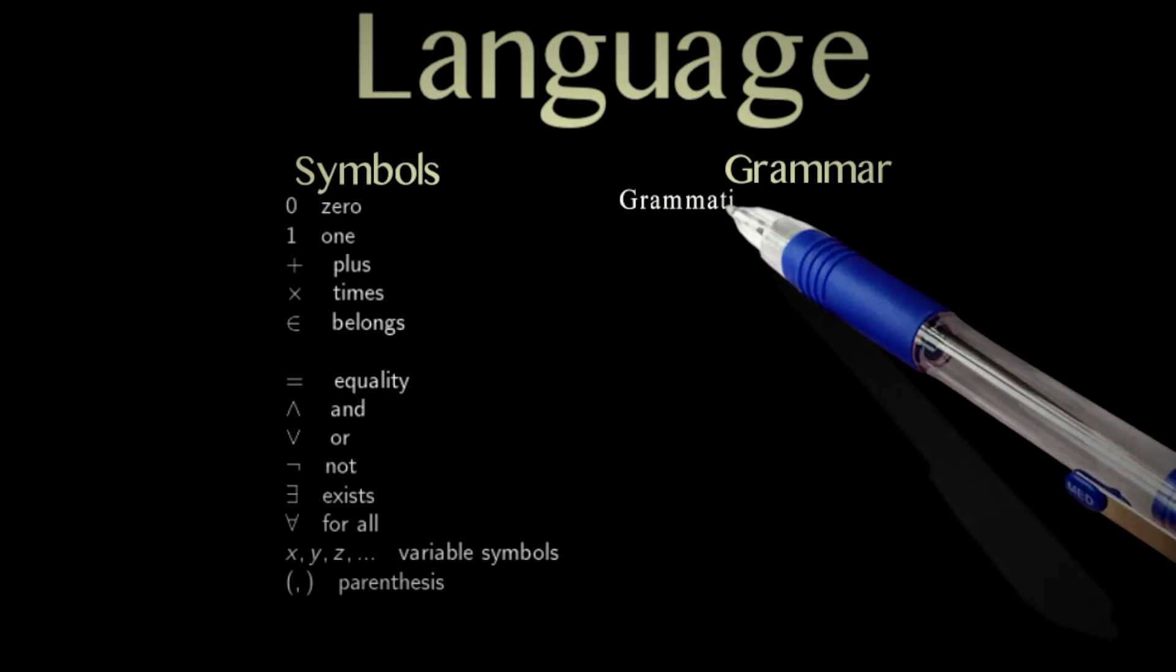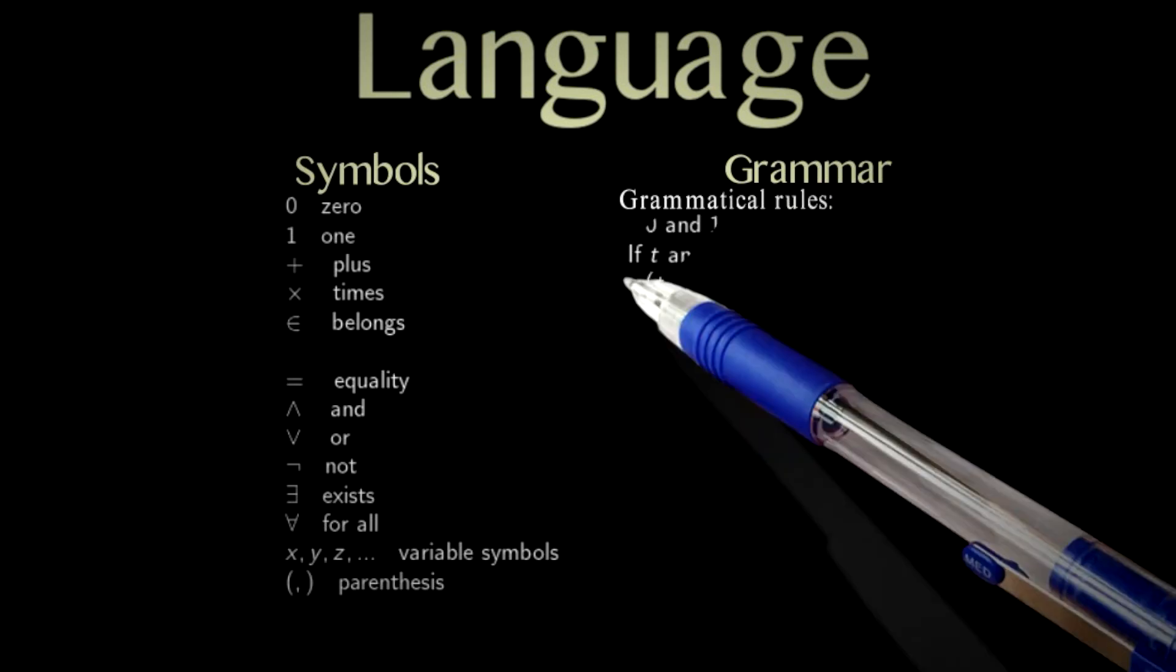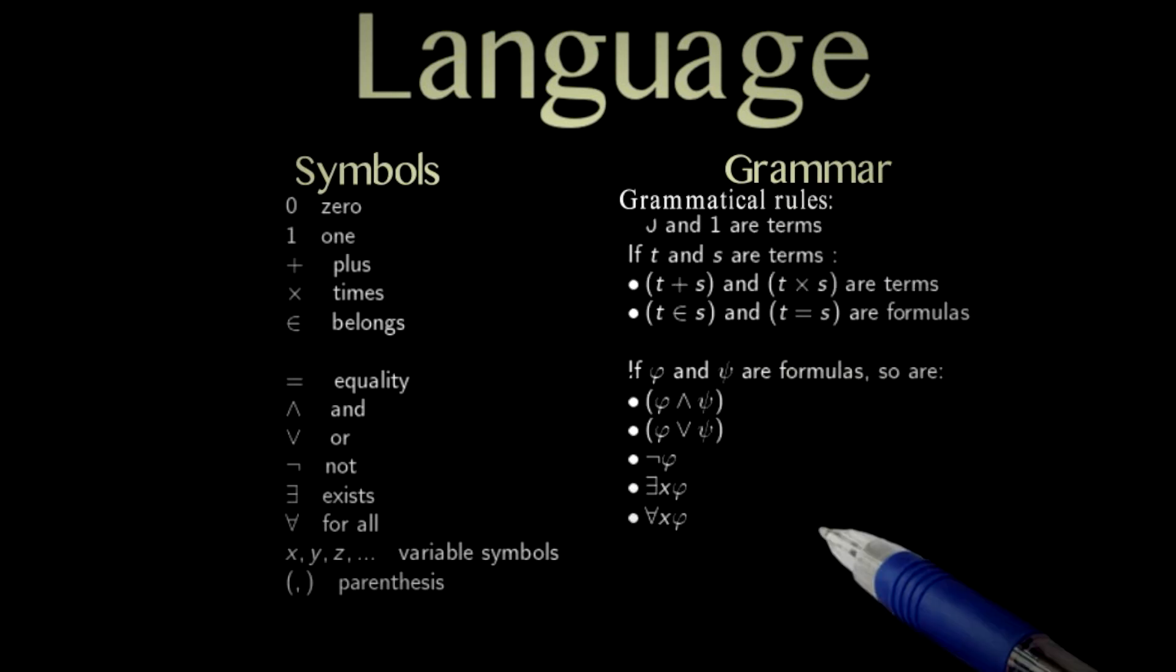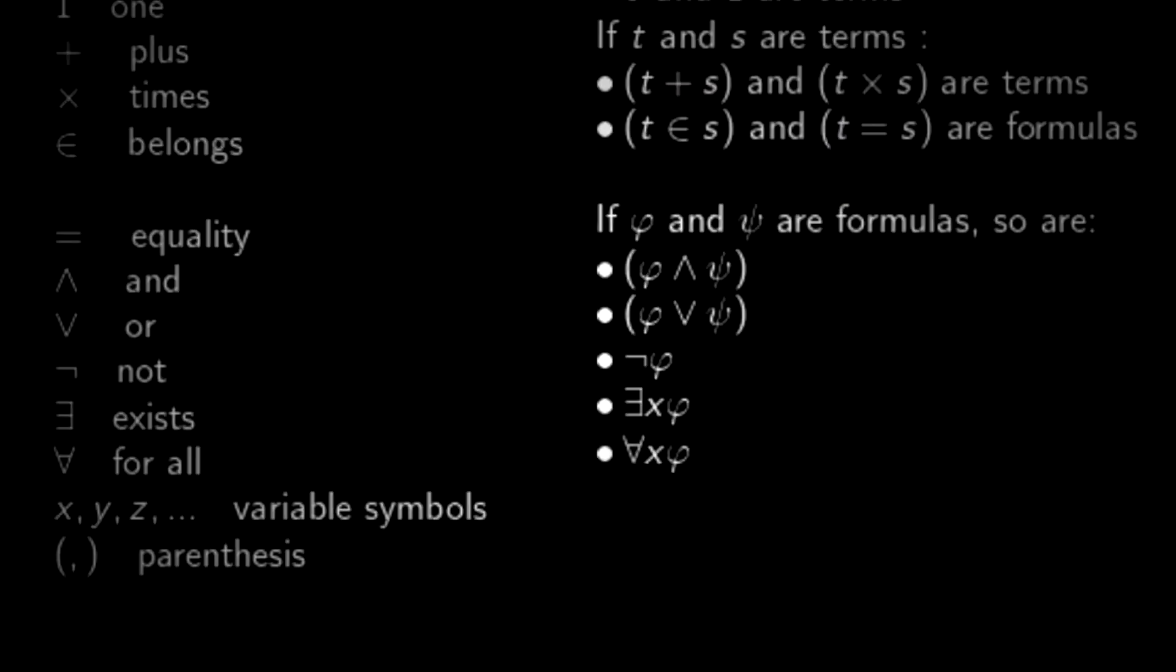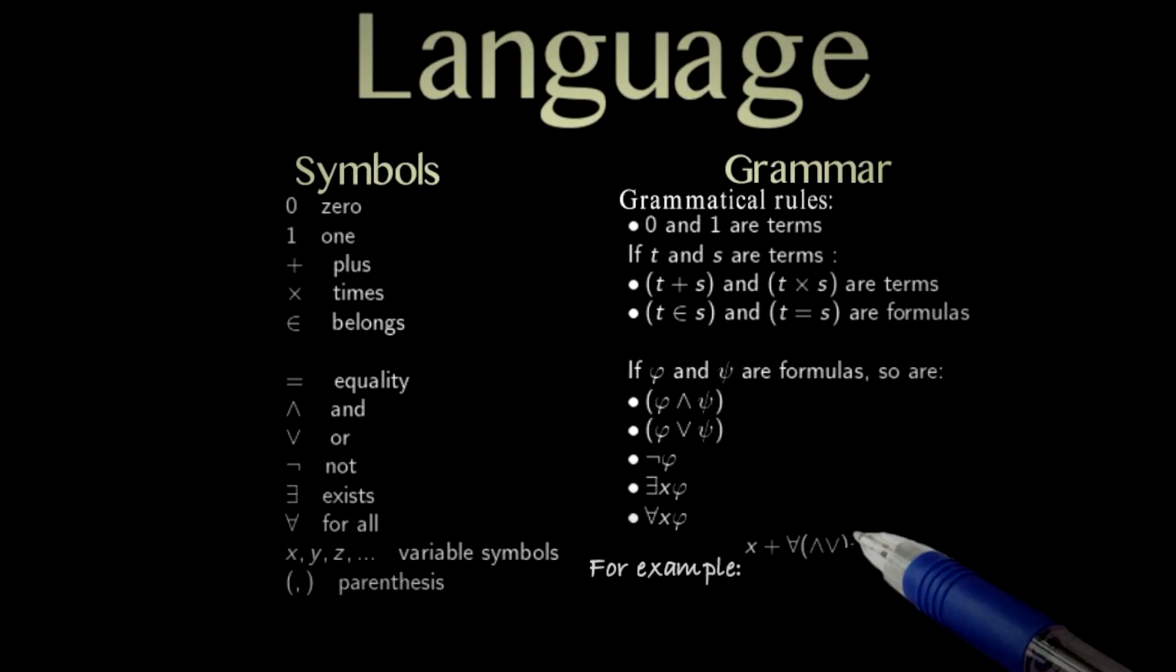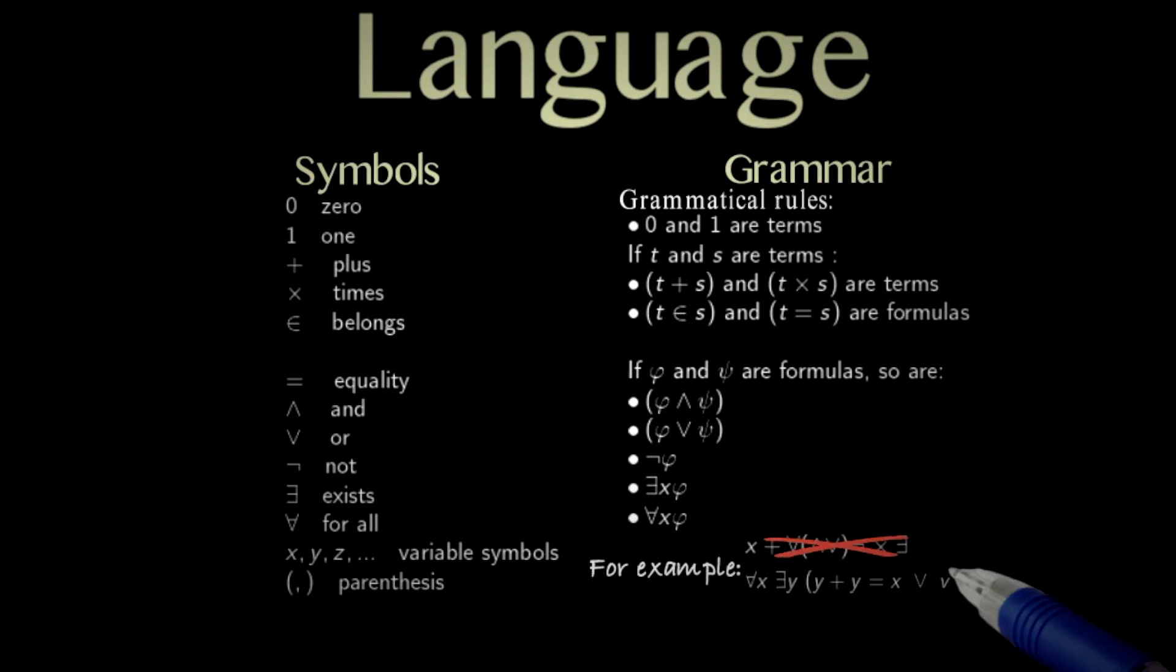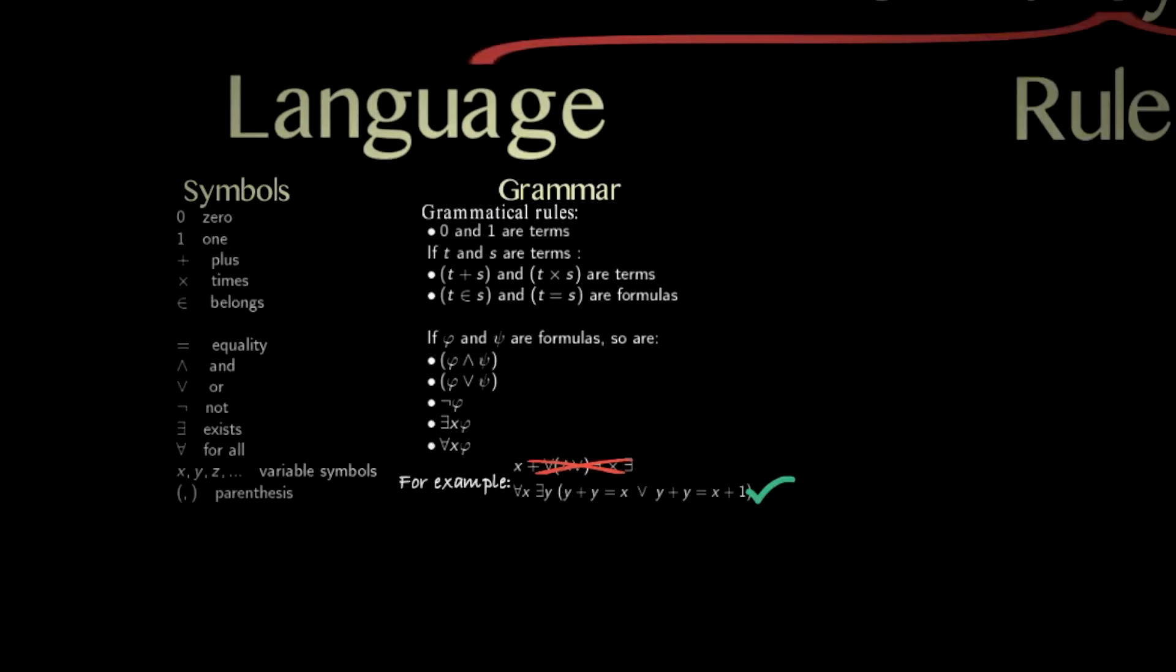Then we need to put the symbols together. And for that, we need grammatical rules. Here's a standard set of rules. But don't worry about the details. I don't want to get into them right now. I just want you to see what they look like. Essentially, when you see a string of symbols, you're going to be able to tell if it makes sense or doesn't. For instance, this one here obviously doesn't make sense. While this other one, for every x there exists a y such that y plus y equals x or y plus y equals x plus 1. It's a sequence of symbols that makes sense.